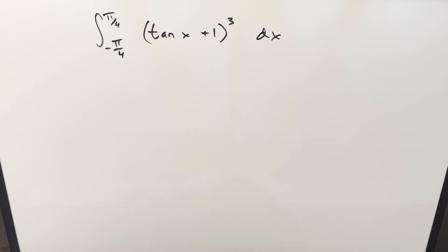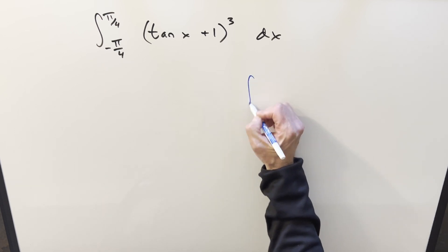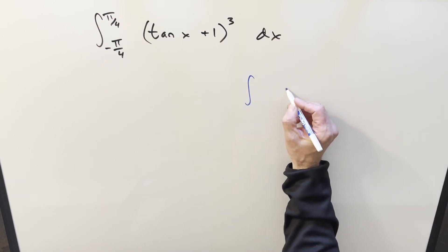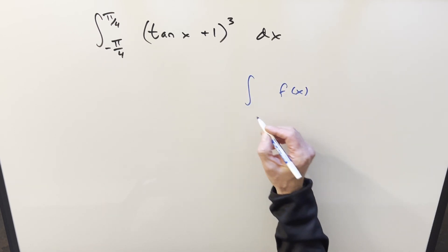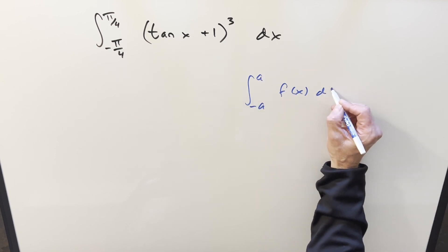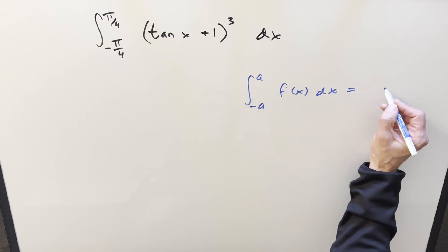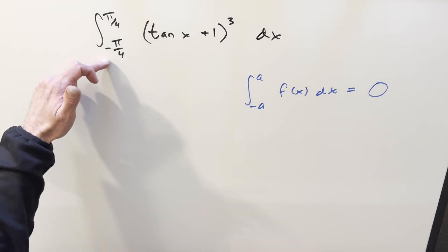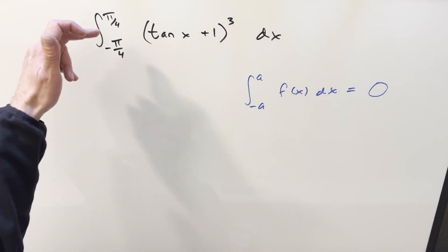This one is definitely some kind of trap because we have this principle for odd functions. If we have f of x as an odd function and our bounds are symmetric around 0, then we can say this integral is 0. In our problem, our bounds are symmetric around 0, minus pi over 4 to pi over 4.